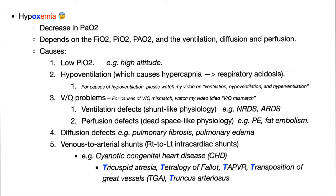Now, hypoxia causes: hypoxia, hypoxemia, hemoglobin-related abnormalities. Hypoxemia — definition: decreased PaO2, the partial pressure of oxygen in arterial blood. It depends on FiO2, PiO2, or PAO2. If any of these decrease, PaO2 will decrease. This is related to ventilation, diffusion, and perfusion. Causes of hypoxemia or low PaO2: low PiO2 (example: high altitude), and hypoventilation, which leads to hypercapnia and respiratory acidosis due to increased PCO2.